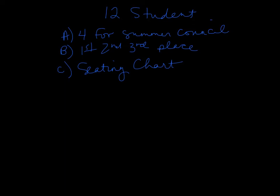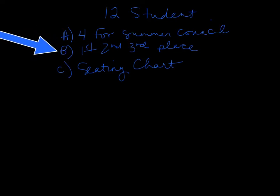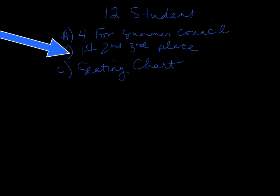Just to recall, we had 12 students in the class and three different problems we were working on. If you choose four for a summer council — just a committee — we determined that was a combination. If you're picking first, second, and third place, that made it a permutation. And then a seating chart was also a permutation because where you place people matters. But that one uses all 12 people, whereas the permutation uses three, and the combination uses four.